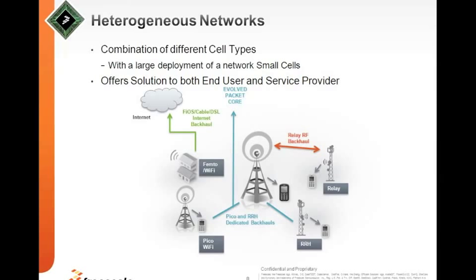In the HetNet architecture, we have the pico base station which could include Wi-Fi. There are also remote radio head and relay configurations allowed by LTE, as well as femto or Wi-Fi access points. The backhaul is interesting — it could be cellular, or for femto and Wi-Fi it's typically a home configuration using cable, DSL, or internet backhaul. This is how the networking landscape is evolving.